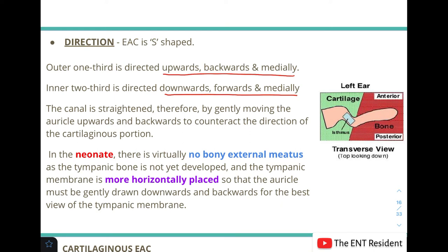To examine the ear and view the tympanic membrane, the canal must be straightened first. In adults, we gently move the auricle upwards and backwards to counteract the direction of the cartilaginous portion. In neonates, the bony external meatus has not developed yet since the tympanic bone has not formed, so the tympanic membrane is more horizontally placed — the auricle must be gently drawn downwards and backwards for the best view.